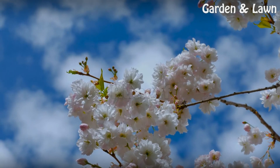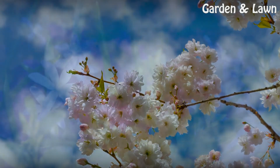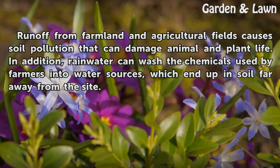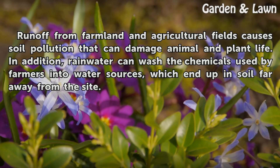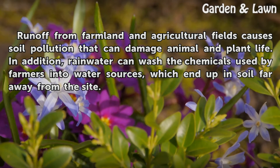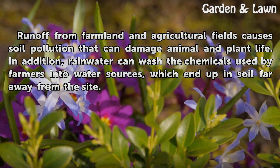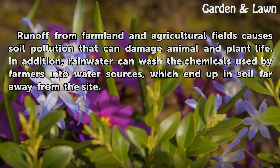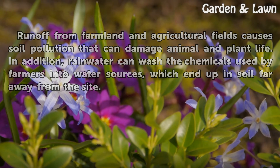Runoff. Runoff from farmland and agricultural fields causes soil pollution that can damage animal and plant life. In addition, rainwater can wash the chemicals used by farmers into water sources, which end up in soil far away from the site.